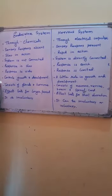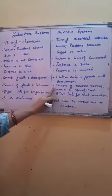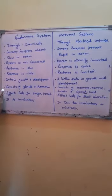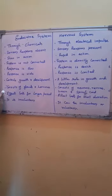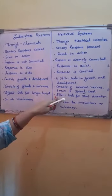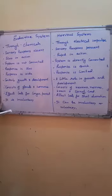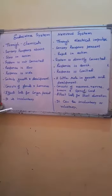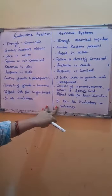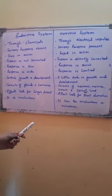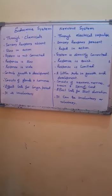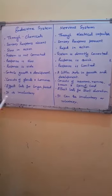The endocrine system consists of glands and hormones, whereas the nervous system consists of neurons, nerves, brain, and spinal cord. In the endocrine system, the effect lasts for a longer period of time, whereas in the nervous system the effect lasts for a short duration. The endocrine system is always involuntary — the action cannot be started by the will of the organism — but the nervous system has some parts that are involuntary and some that are voluntary, so it can be both.